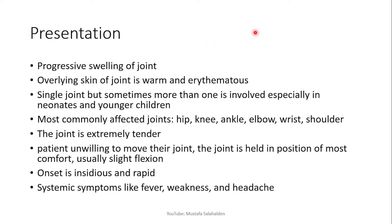If a patient has septic arthritis, they will present with progressive swelling of the joint, and the overlying skin is warm and erythematous. Usually a single joint is affected, but sometimes more than one is involved, especially in immunocompromised and younger children. The most commonly affected joints are the hip, knee, ankle, elbow, wrist, and shoulder.